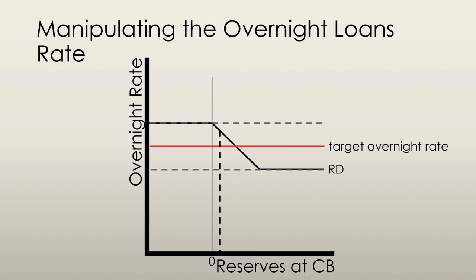The central bank's open market operations will determine the actual amount of reserves at the central bank. Just like with any other economic model, there is an equilibrium — the equilibrium occurs where the quantity of reserves at the central bank equals the reserves demanded, and this determines the overnight loans rate. The central bank can alter the overnight loans rate by manipulating the amount of reserves. If the overnight rate is higher than the target rate, reserves in the central bank are lower than needed, so the central bank buys government securities from banks, transferring money into their reserves, which increases total reserves and brings the overnight loans rate down.